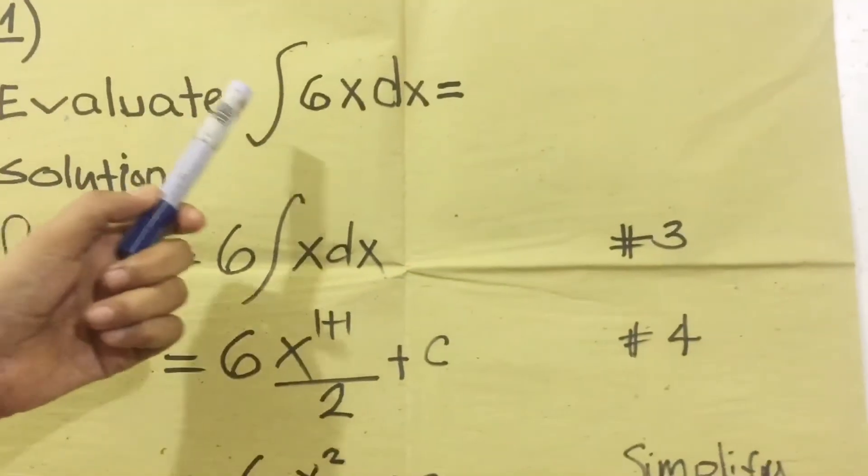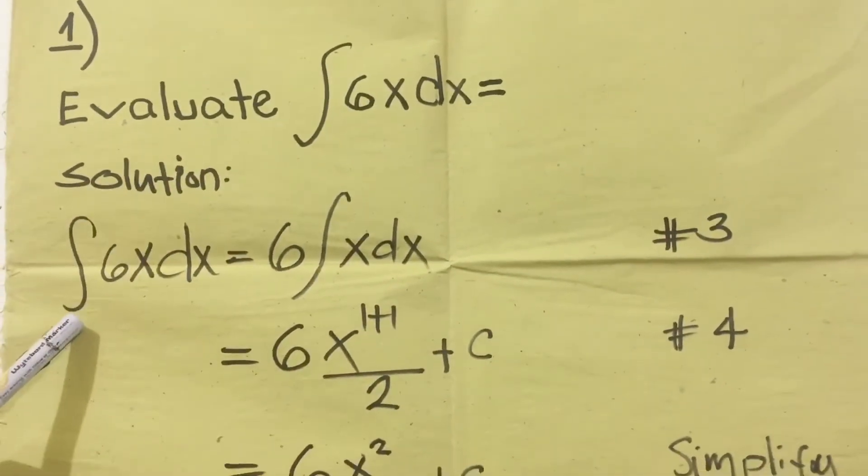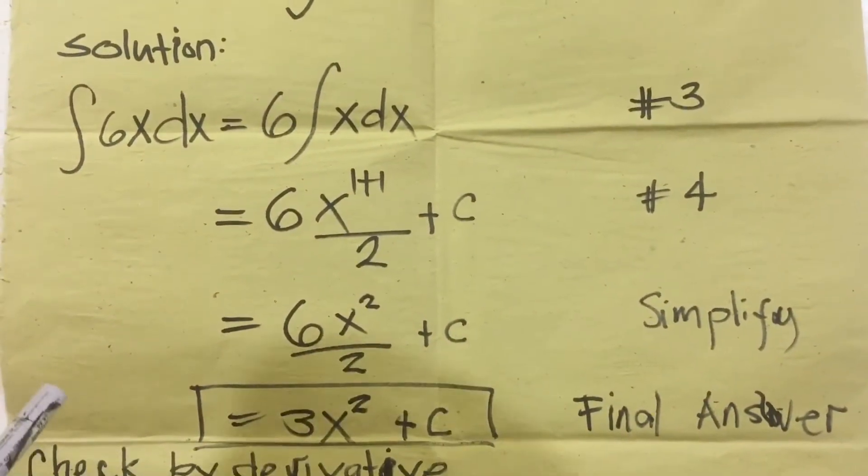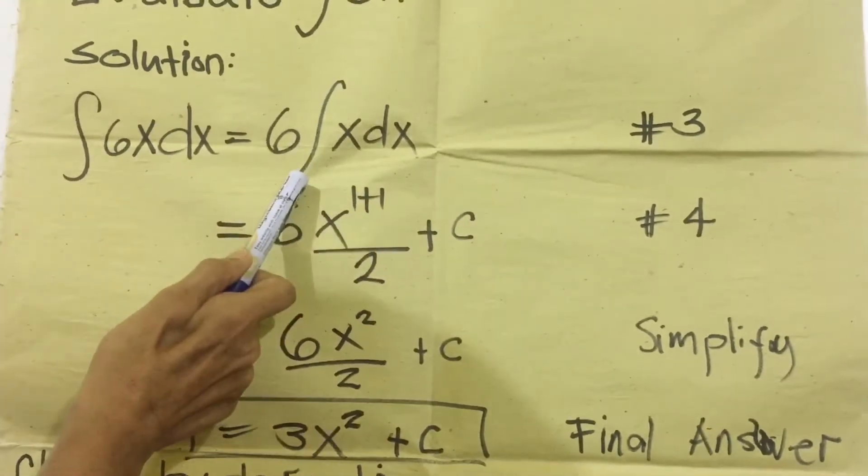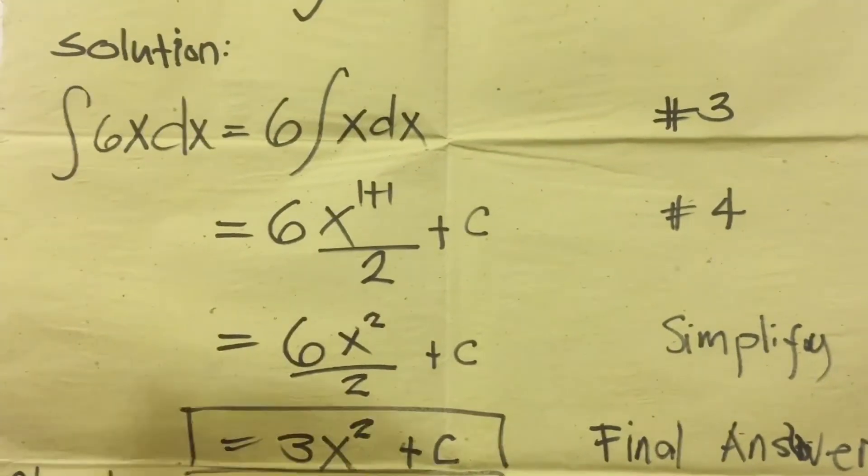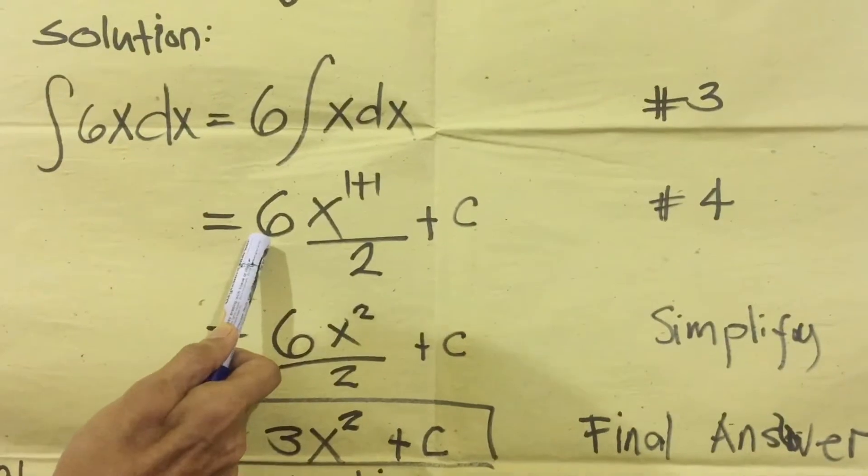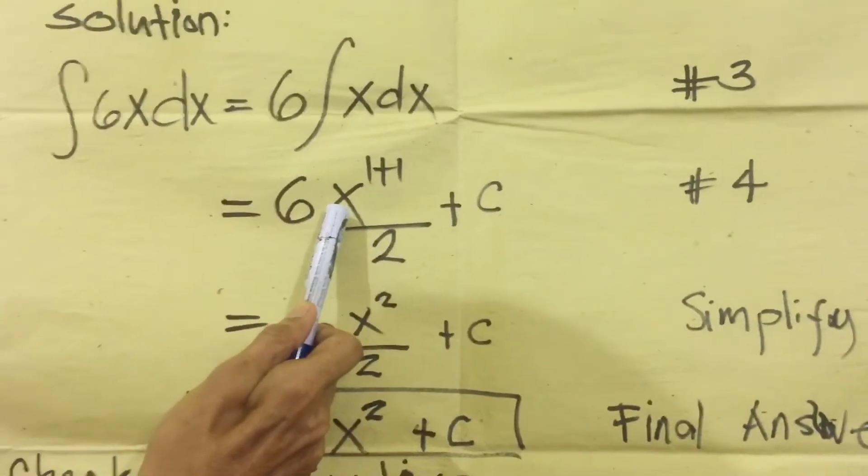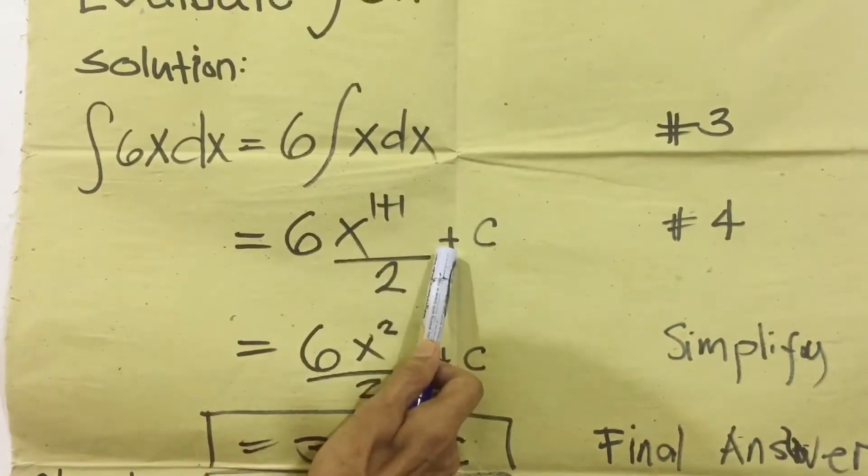How to evaluate integration function. Our solution, copy this first, then we will use formula number three. Formula number three, the constant number six, write before the integral symbol, then copy the X dx. Next, apply formula number four. Copy the constant number six, then the integral symbol disappears. Copy the X variable, add one to the exponent. X plus one, X plus one equals two.